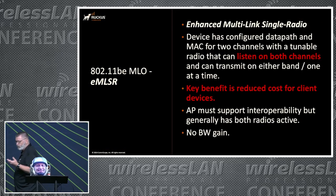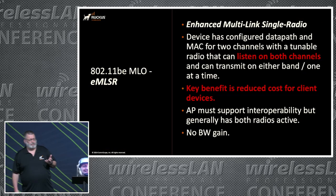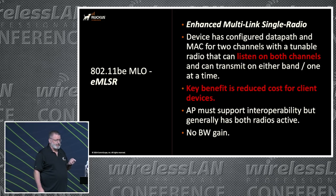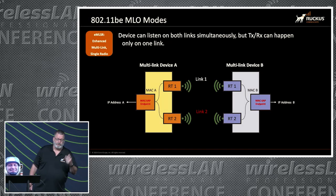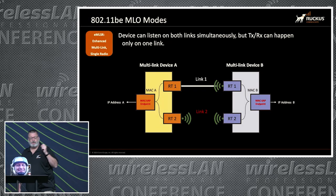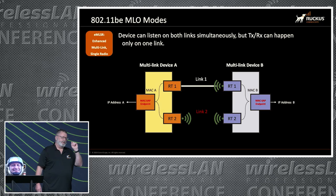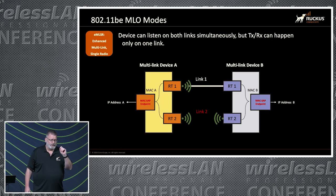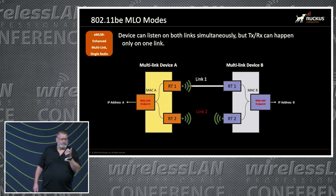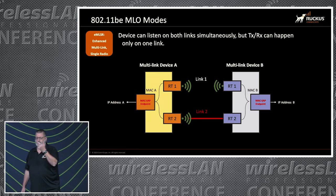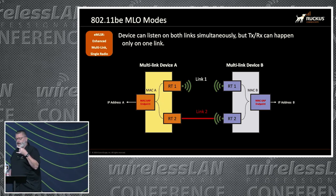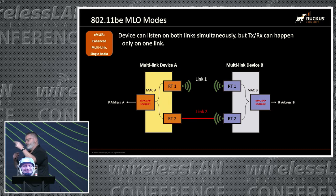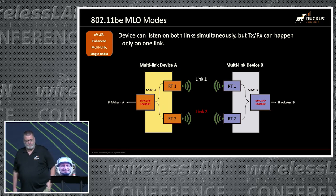The one that is more likely to be seen — that we've seen the most of — is the enhanced multi-link single radio. This one listens on both bands at the same time. We have our two radios, and what you'll notice is while information and links are going on link one, the radio on link two stays on — so it's listening, it knows what's happening. If it needs to switch, it can automatically switch because it's already there, already working. So the client device knows what's happening on the other band at all times.